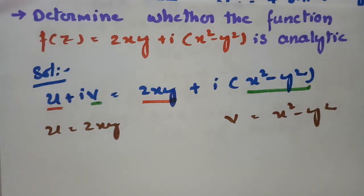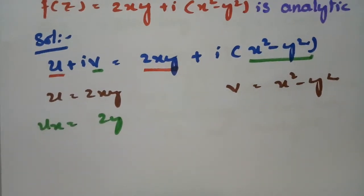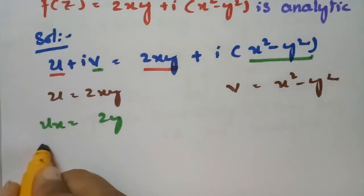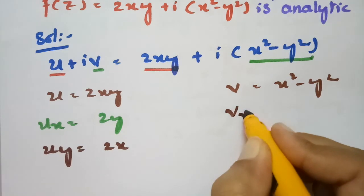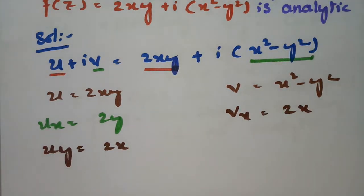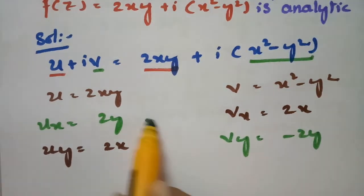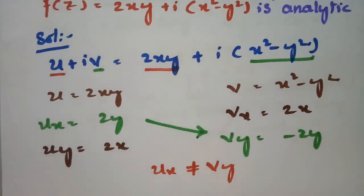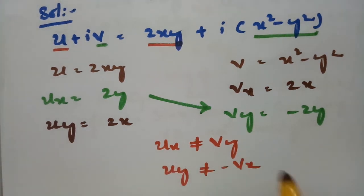Differentiating u = 2xy: ux = 2y and uy = 2x. For v = x² − y²: vx = 2x and vy = −2y. Comparing these: ux ≠ vy (2y ≠ −2y), and uy ≠ −vx.